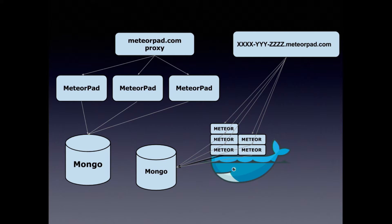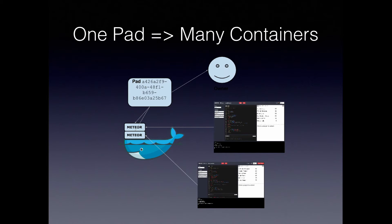You see that there is a proxy up at the top, which goes to three different Meteor apps, each running MeteorPad. And then all of your files are stored in a Mongo database. If you hit one of these URLs with a different subdomain, then you are redirected to one of the Meteor containers, and this is where each of your MeteorPad apps are run. One concept I wanted to stress is that one pad can have many containers. A pad is basically just a collection of source code, and every one of your browser tabs is essentially a different running instance of that app.